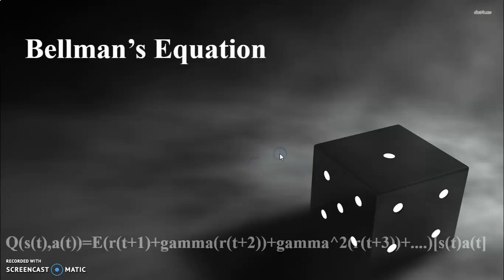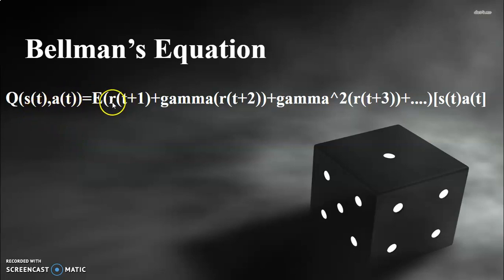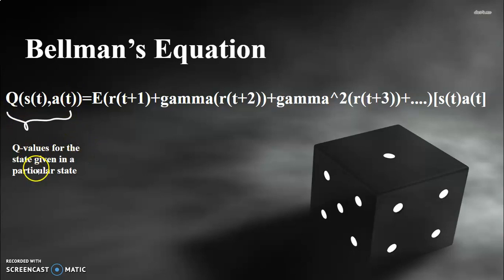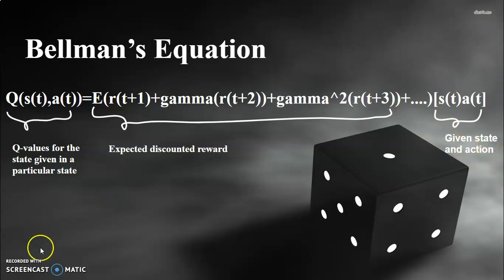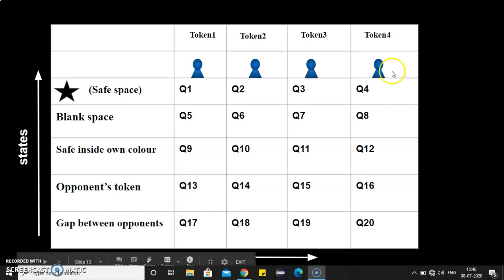Bellman's equation is: Q(S_t, A_t) = E[...], where S_t is the state, A_t is the action, and R is the reward. The left-hand term represents the updated Q-values for a given state-action pair. The full expression incorporates the expected discounted reward — which can be replacing the opponent's token or moving towards home. After applying Bellman's equation, the Q-values keep updating, making the process iterative. While you play against the computer, it is internally calculating all these Q-values and moving accordingly.